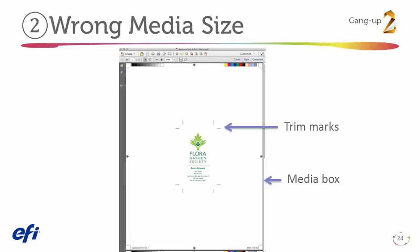Here's an example of the second common issue. The design is positioned on a larger sheet — the media box is larger than the design size. This PDF also contains trim marks. In order to correct this file and get ready for production, it's going to require extra time and a higher level of expertise at the print shop to correct it, adding cost that you will need to pass on to your customer.